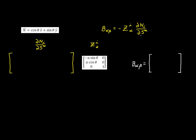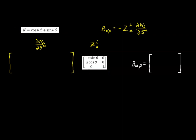We'll begin with the cylindrical surface. I have copied the shift tensor and the normal here. The first thing we need to do is evaluate all the possible partial derivatives with respect to our surface coordinates. We'll take each component of our normal and find the partial derivative, first with respect to theta, and then with respect to z. With respect to theta, the partial derivative of the first component is simply negative sine of theta.